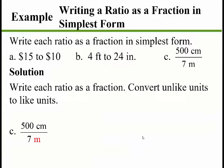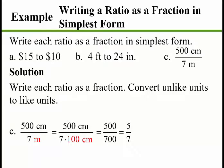Last one: centimeters to meters. There are 100 centimeters in a meter. The centimeters cancel, 7 times 100 gives 700, and 500 to 700 — the hundreds cancel — giving a ratio of 5 to 7.